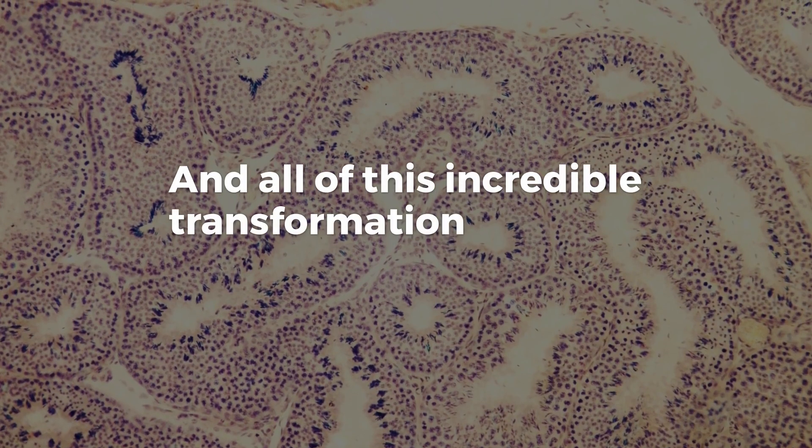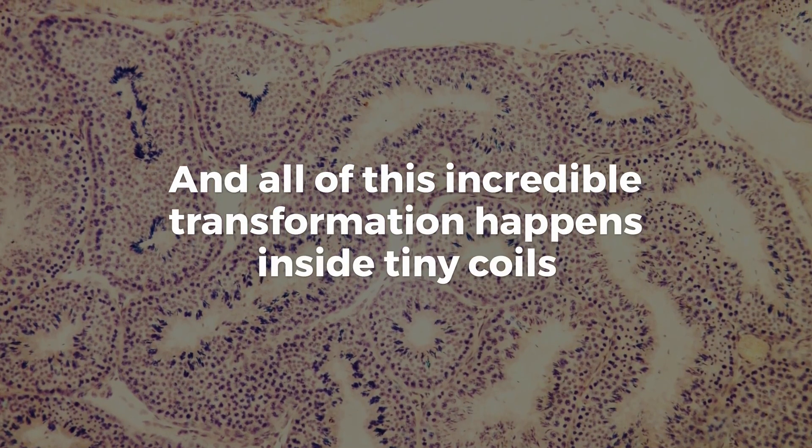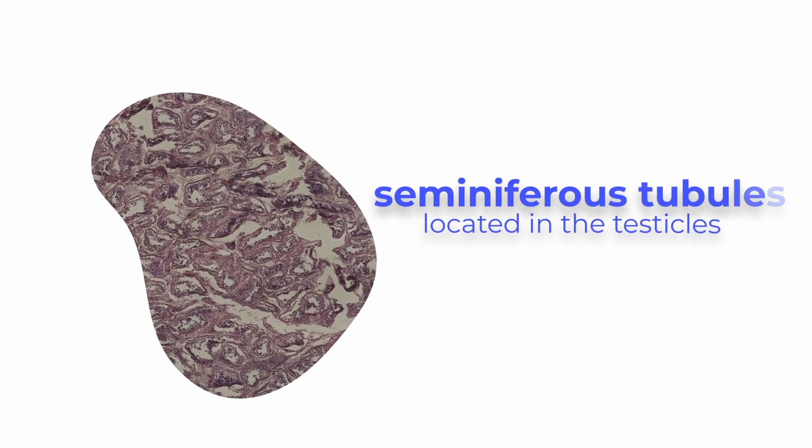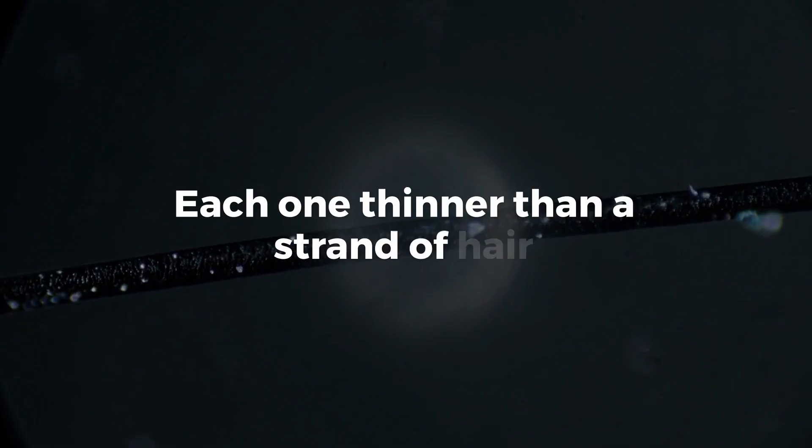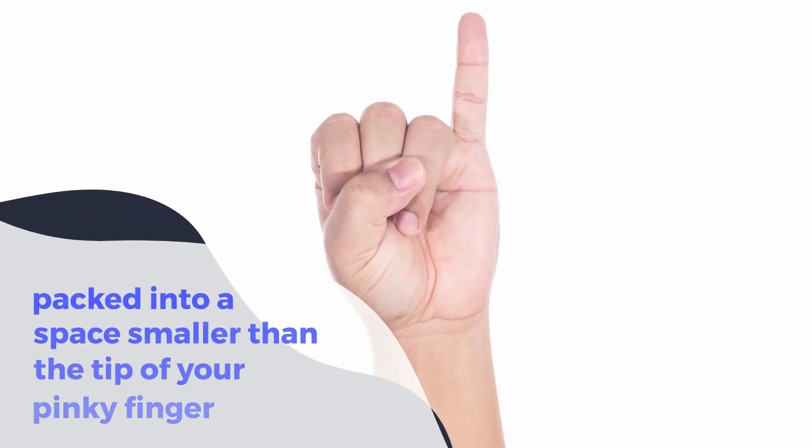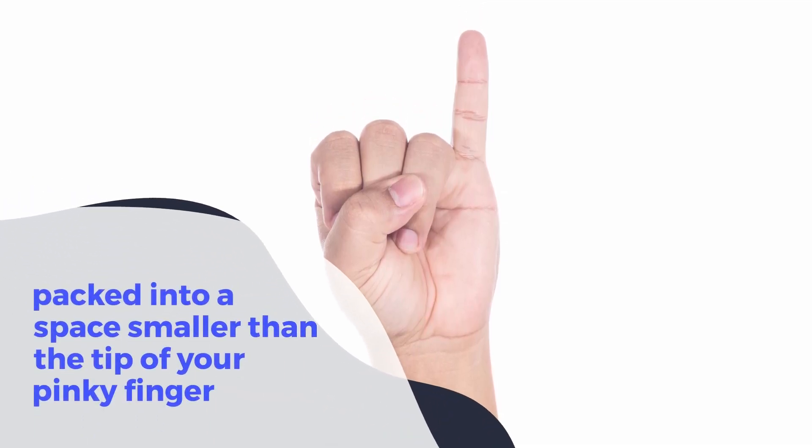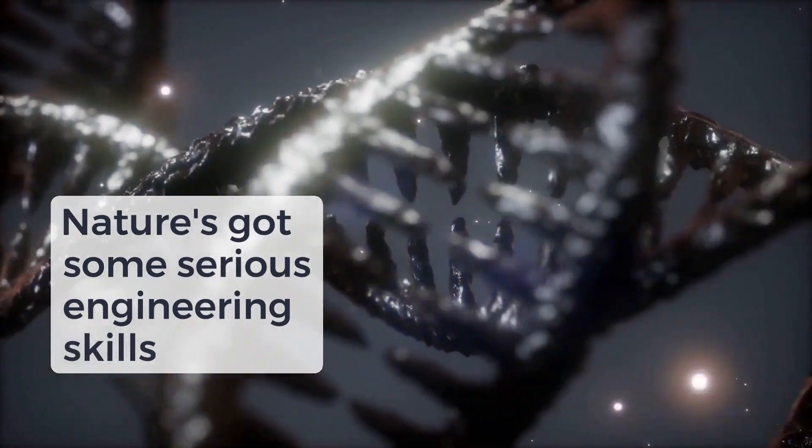And all of this incredible transformation happens inside tiny coils called seminiferous tubules, located in the testicles, each one thinner than a strand of hair and packed into a space smaller than the tip of your pinky finger. Nature's got some serious engineering skills.